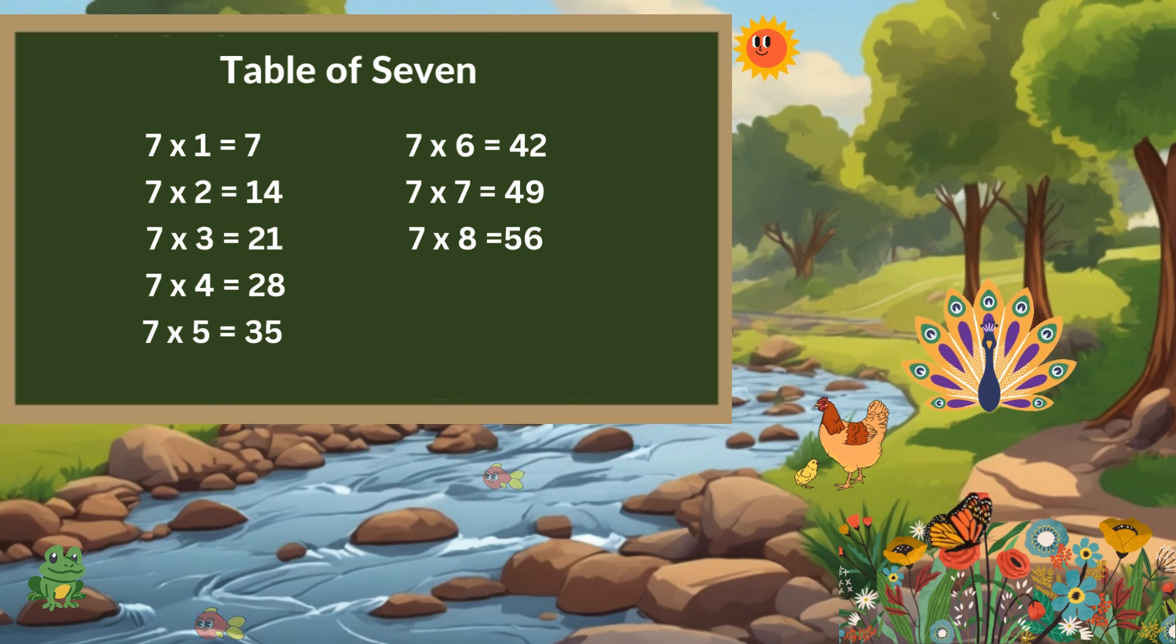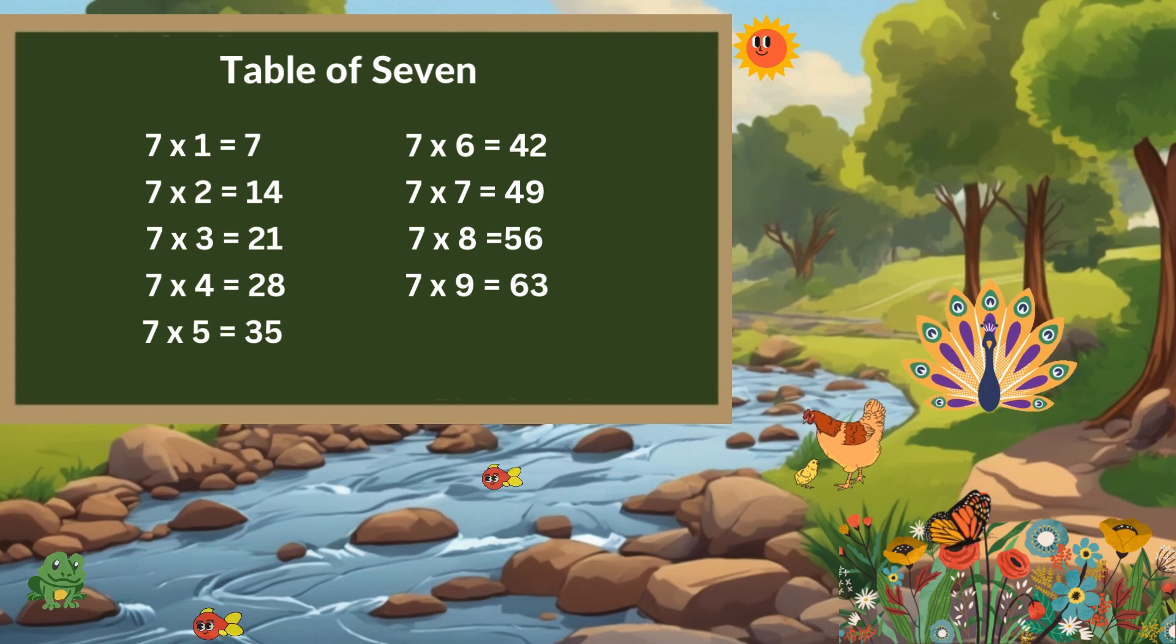7 times 8 is 56. 7 times 9 is 63. 7 times 10 is 70.